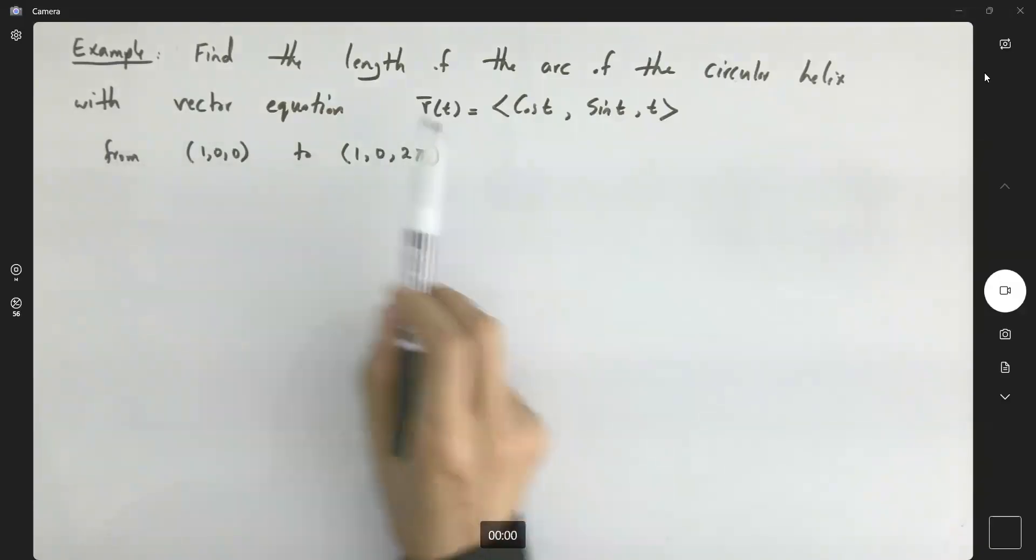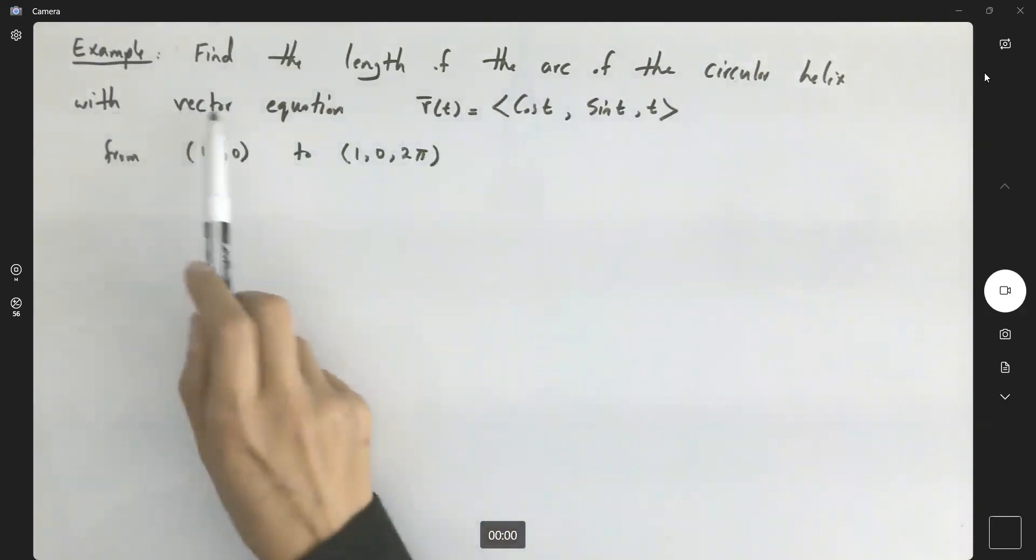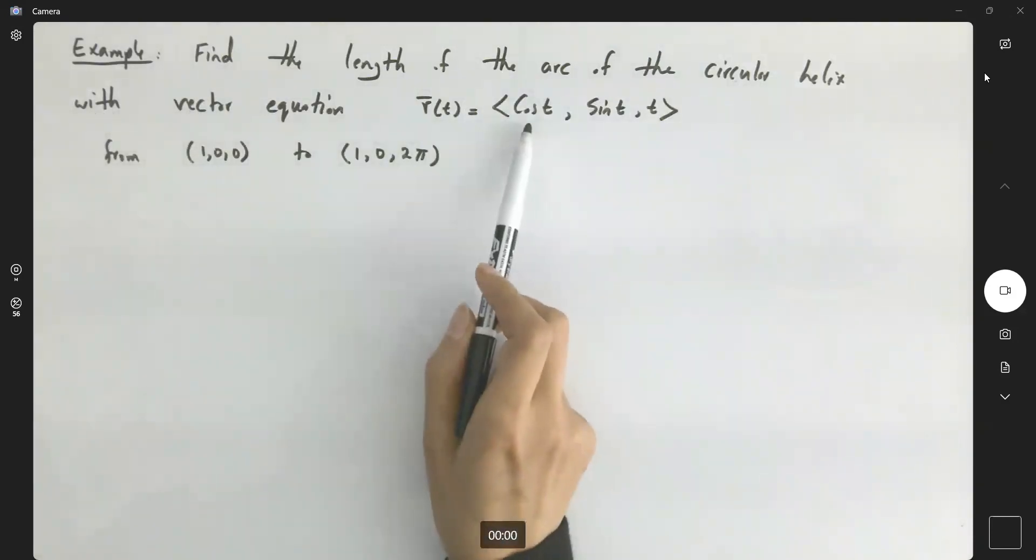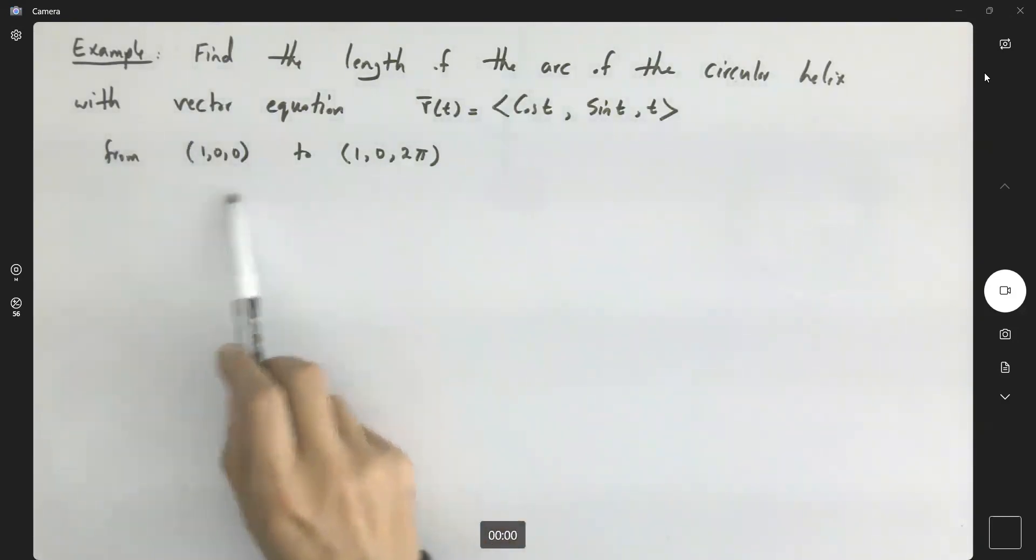Let's solve the following question. We are interested in finding the length of the arc of the circular helix with vector equation given to us. The first component is cosine, second component is sine, and the last component is t, starting from the point (1,0,0) to the point (1,0,2π).